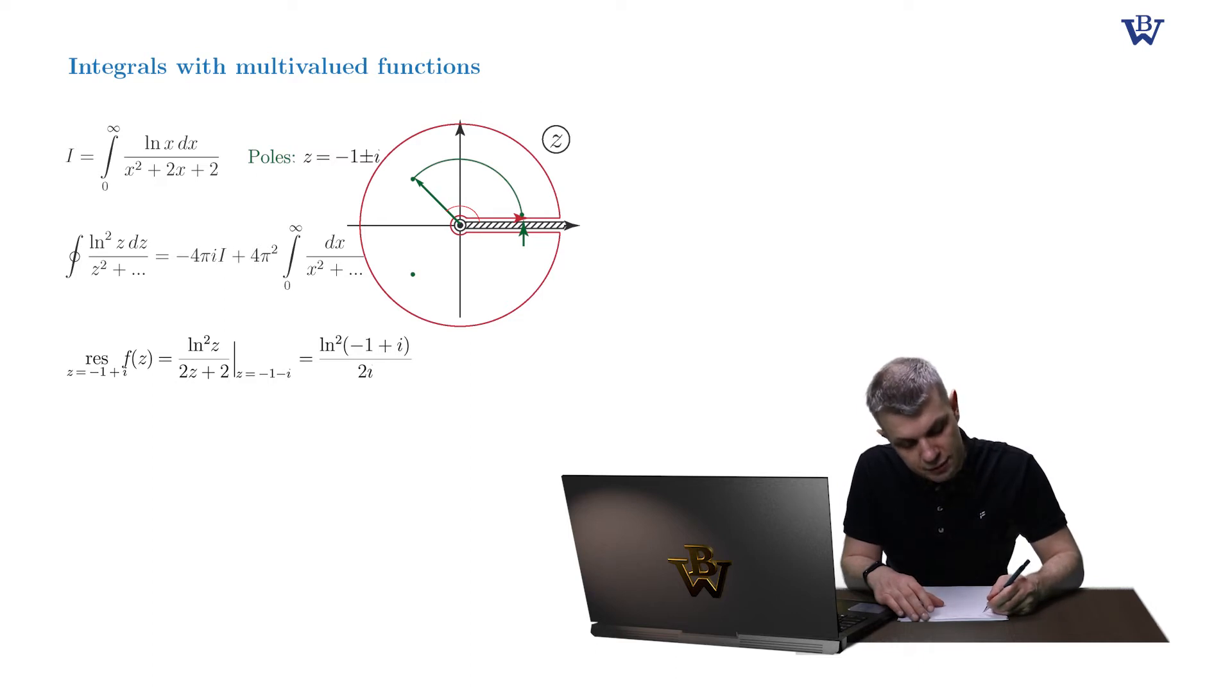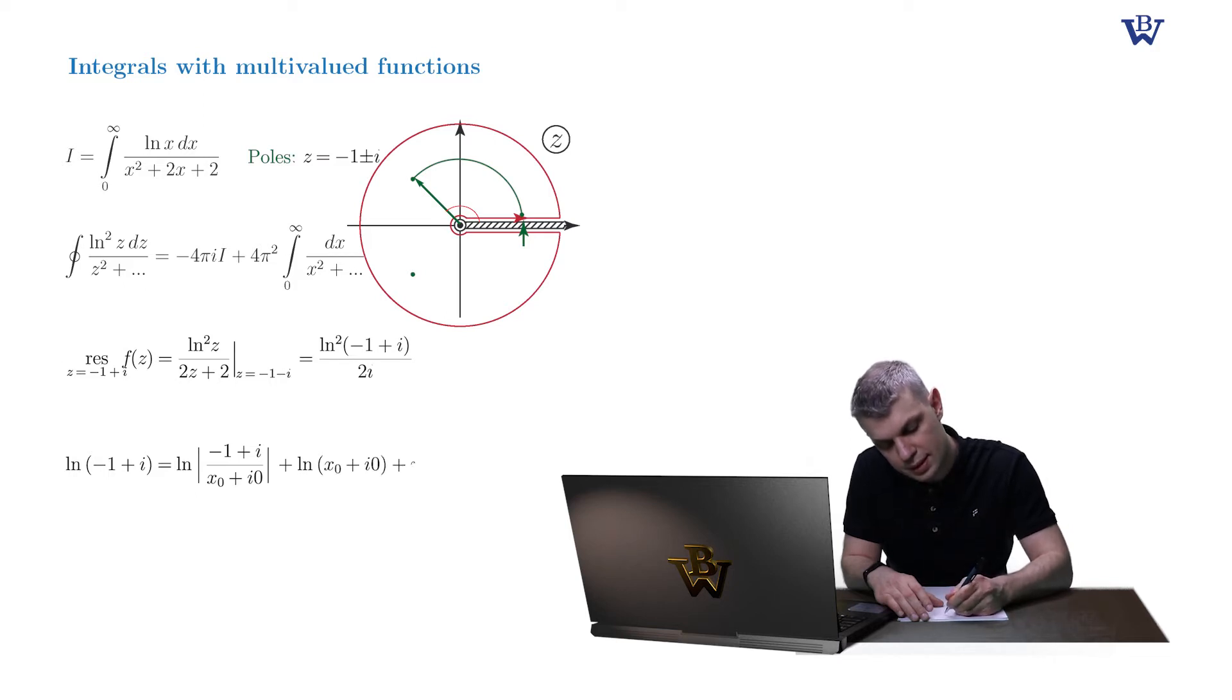Alright, so the standard formula is as follows. Log of minus 1 plus i equals the log of modulus of the ratios of these two complex numbers, plus the log of x0 plus i0, plus i delta argument of z.